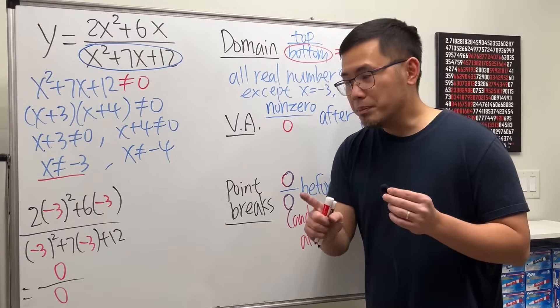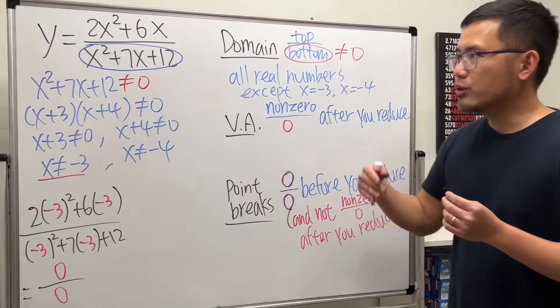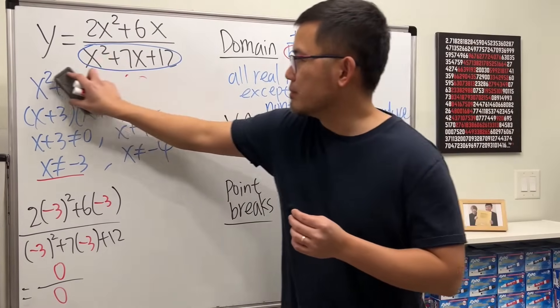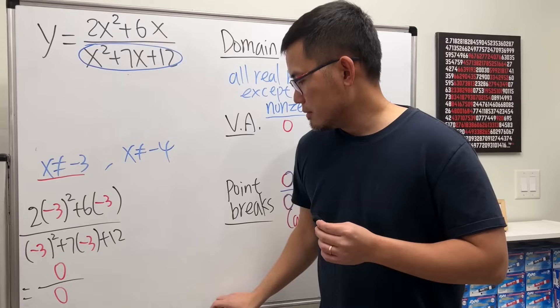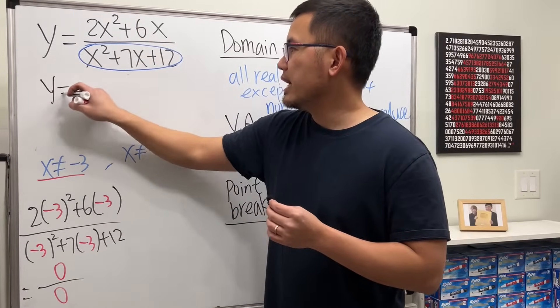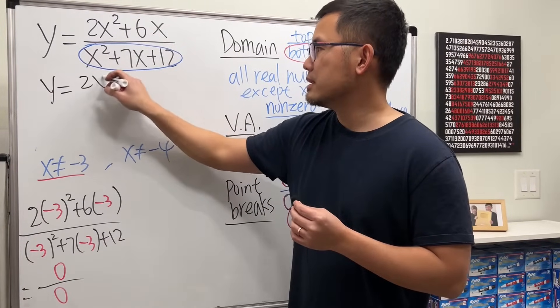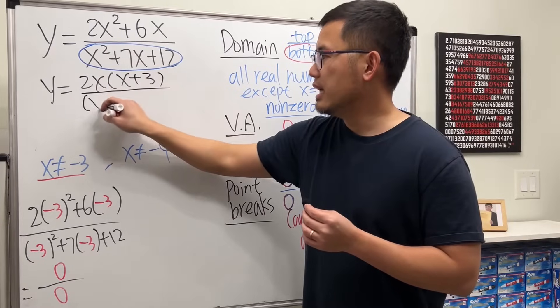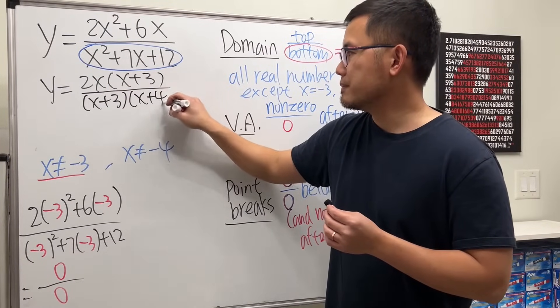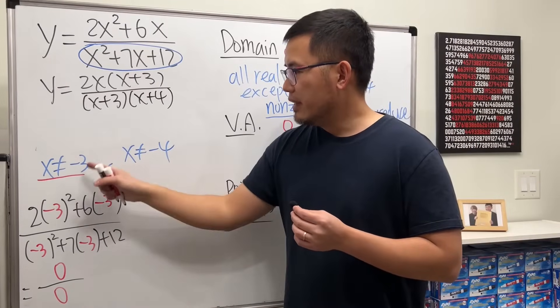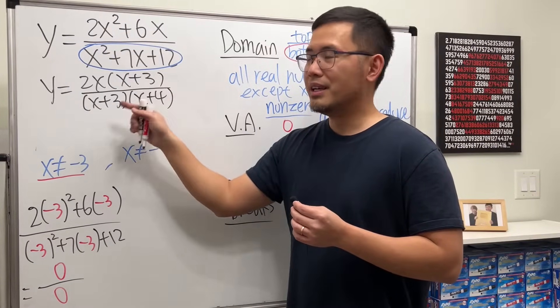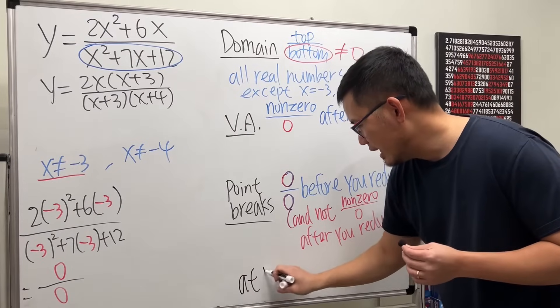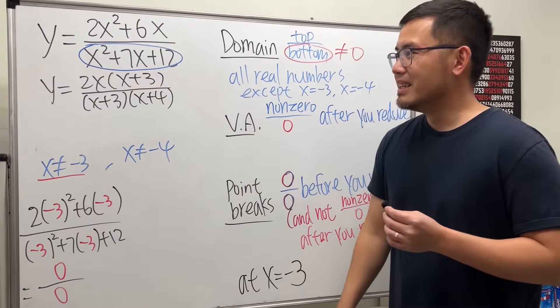But you have to be careful. So 0 over 0 before you reduce. And then you have to make sure after you reduce, you don't get 0 over 0. Have a look right here. If we factor this, we can factor out 2x on the top. And then we get x plus 3. And then for the bottom, we get x plus 3 times x plus 4. As you can see, negative 3 will make this 0, likewise that 0. So that's the point break. At x equals negative 3.